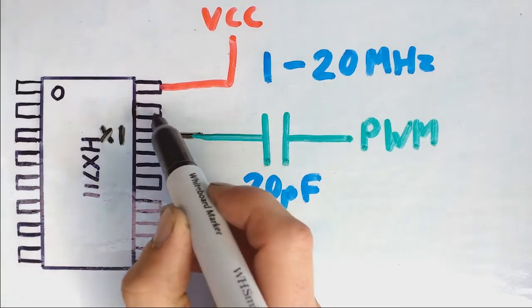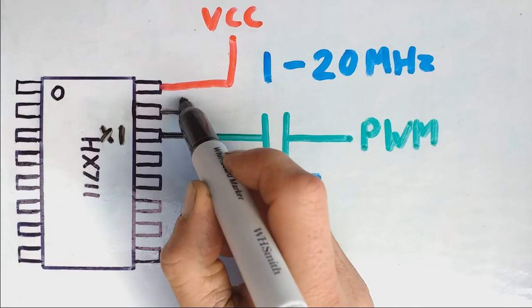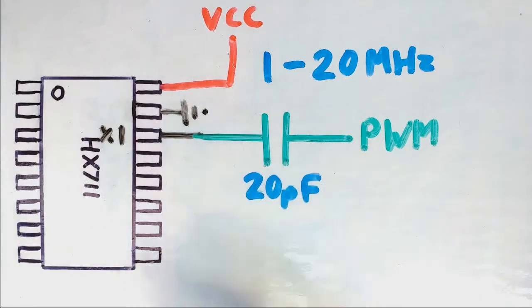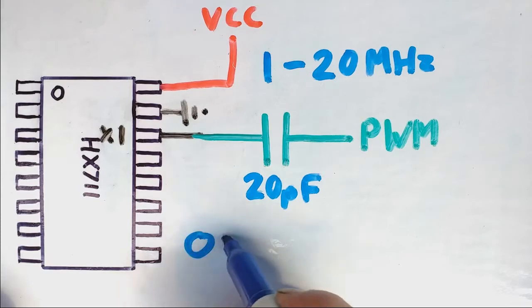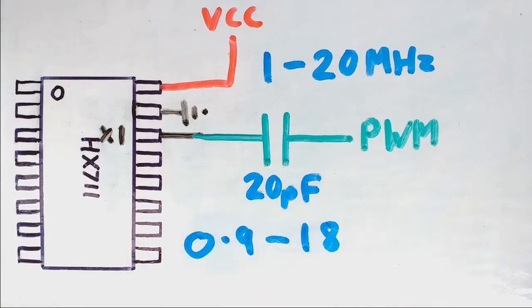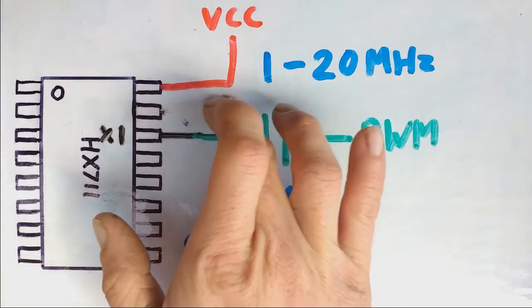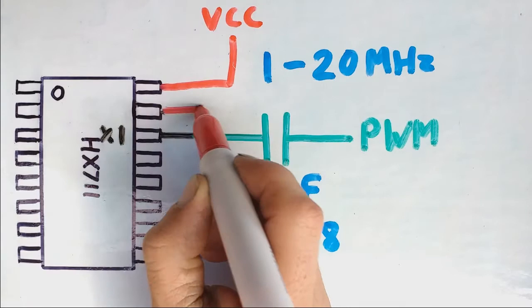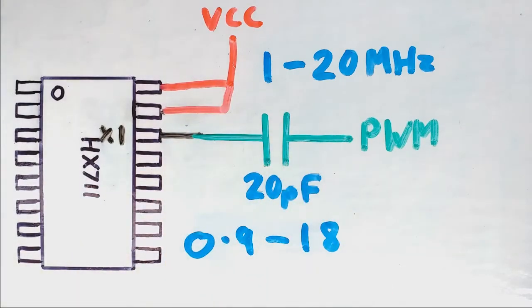The range of sample rates which you can expect to get if this rate pin here is at zero, connected to ground, is between 0.9 and 18 samples per second. If instead this rate pin is at one or connected to VCC, you can expect to get between 7 and 145 samples per second approximately.